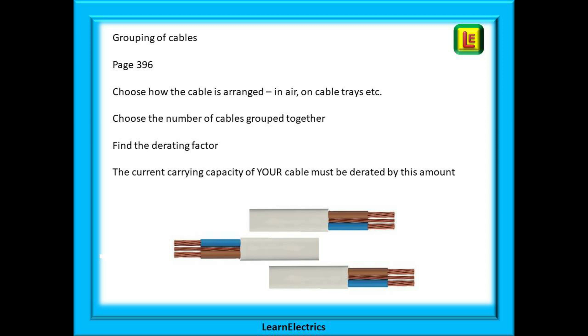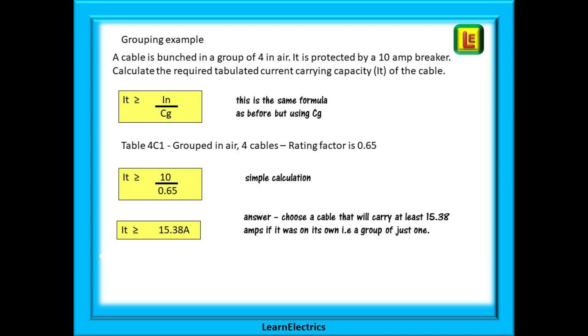Here on page 396 we must choose how the cable is arranged. In air, on cable trays etc. Then choose the number of cables that are grouped together including your own cable. Find the derating factor in the table and this tells us that the current carrying capacity of your cable must be derated by this amount. Try this question.